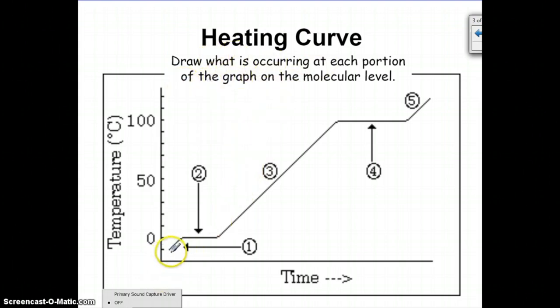Let's first talk about what's happening at each portion of the graph. First, I'll just give you a little background on the graph. You have an increase in temperature at the bottom on section 1, and then on section 2, you have no change in temperature, and then section 3, there's another change in temperature from 0 to 100.